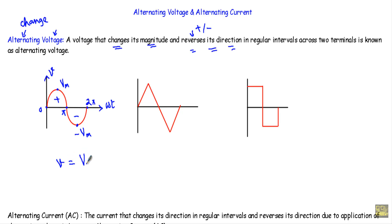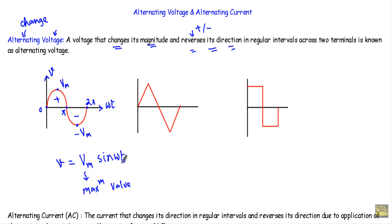We can express this sinusoidal waveform using the equation: small v equals Vm sin(ωt), where Vm represents the maximum value of the sine wave, V represents the alternating voltage, and ω (omega) is the angular velocity or angular frequency of this time-varying quantity.